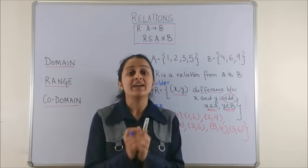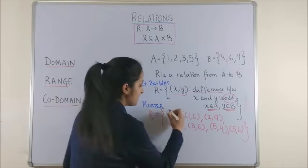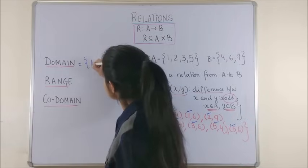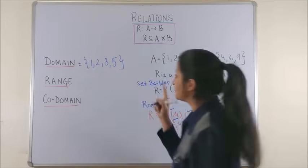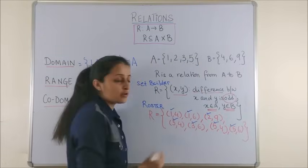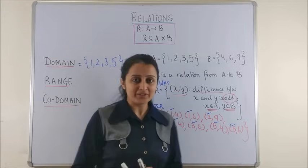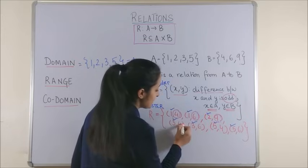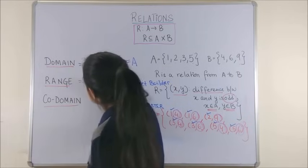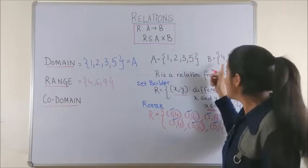Now, having done this, now it is very easy to identify. Yes, domain is the set of all the first elements in the ordered pair. So, that means, if we mark the first elements, they are 1, 2, 3 and 5. This becomes the domain for the given relation, which happens to be your entire set A this time. Moving on, talking of the range, it becomes the set of all the second elements in the ordered pairs. So, as I can mark 4, 6, 9 and then this thing gets repeated. So, 4, 6, 9 becomes the range for the given relation, which this time happens to be your entire set B.